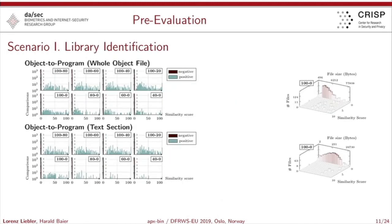In the first run, we performed scenario one — the library identification task — comparing object to program for the whole object file, and also comparing only the text sections. The evaluation confirmed our expectations: if you want to match a library or code fragment and switch focus to only code fragments, the score distributions are very good. The top-left corner of the plot, where we only focus on code fragments, performs considerably better than focusing only on data fragments.